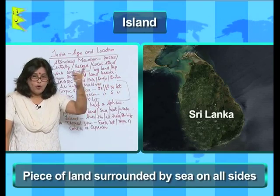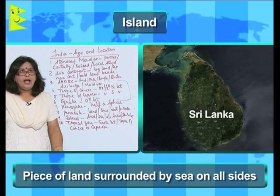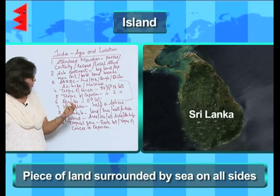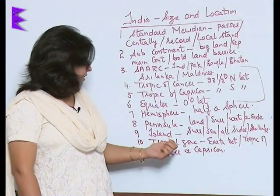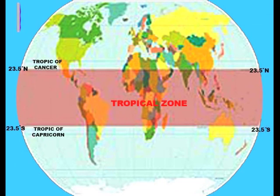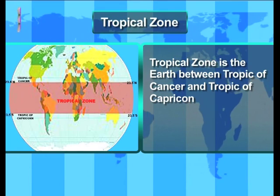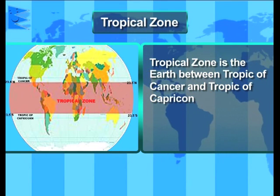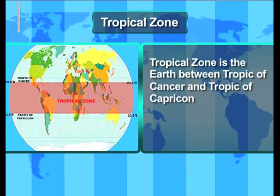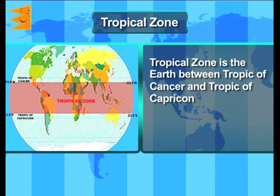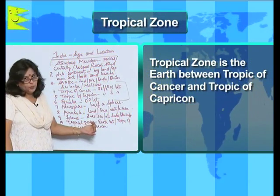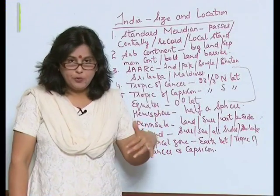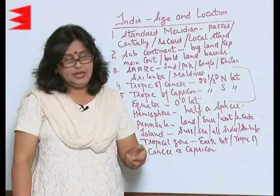Island is that piece of land which is surrounded by sea on all sides. An example of an island is Sri Lanka. Then we have Tropical Zone — the Tropical Zone is that part of the earth which lies between the Tropic of Cancer and the Tropic of Capricorn.